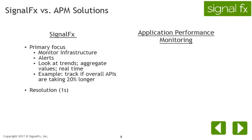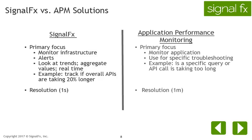The primary focus of SignalFX is monitoring the infrastructure of your systems and alerting you based on rules you define. You can use SignalFX to look at trends and aggregate values in real-time for your applications, with metrics as fine as one-second resolution. Application performance monitoring solutions focus primarily on monitoring applications, used for specific troubleshooting such as how long a specific query is taking. APM solutions tend to provide coarser resolutions of data. SignalFX can integrate with APM solutions such as AppDynamics and New Relic.